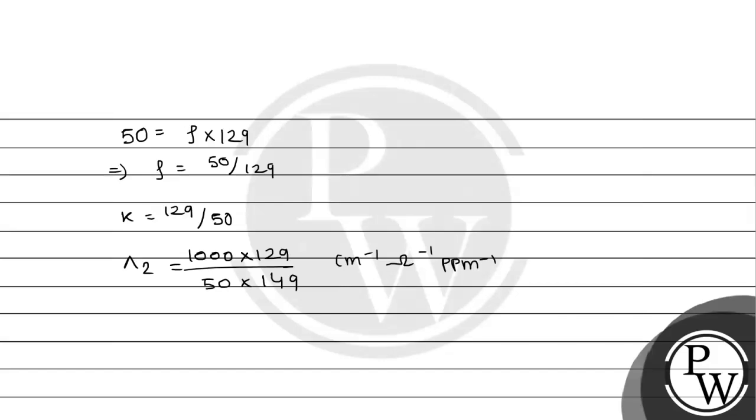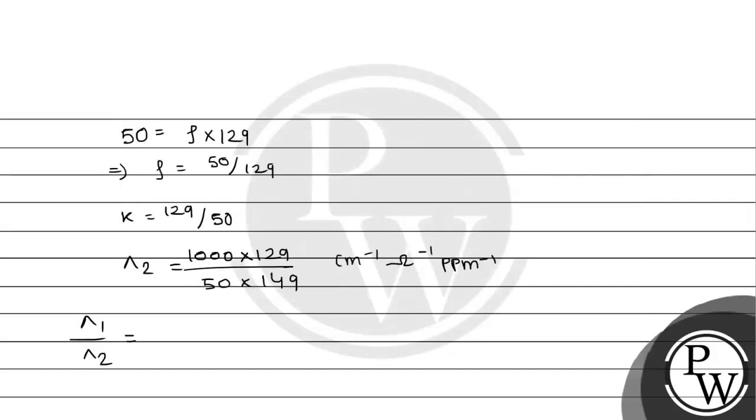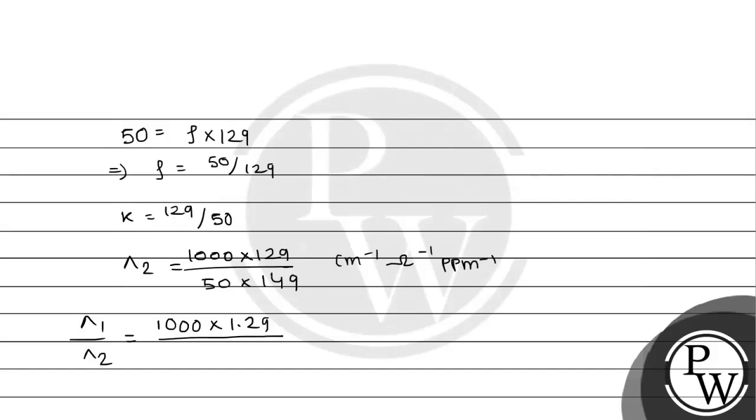Now the ratio lambda 1 divided by lambda 2 will be 1000 multiplied by 1.29 divided by 74.5, all multiplied by 50 multiplied by 149 divided by 1000 multiplied by 129.